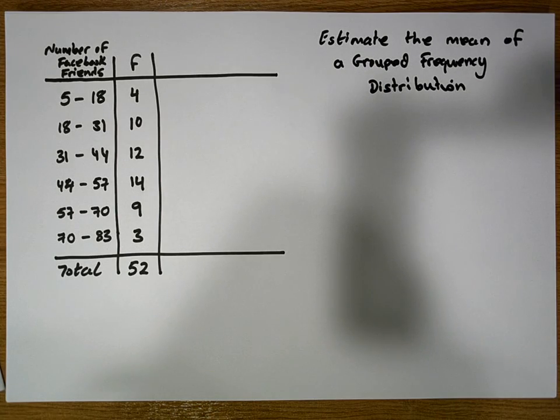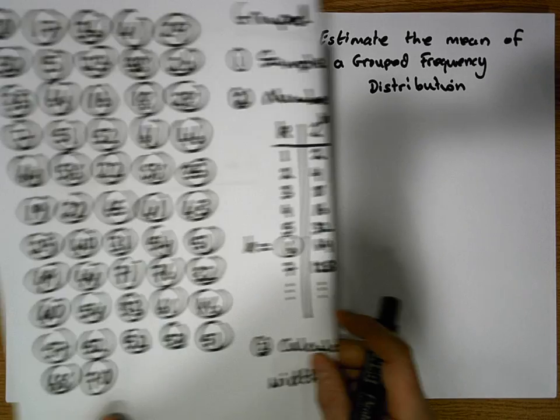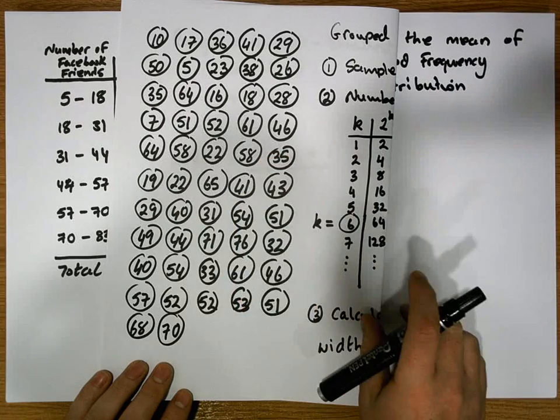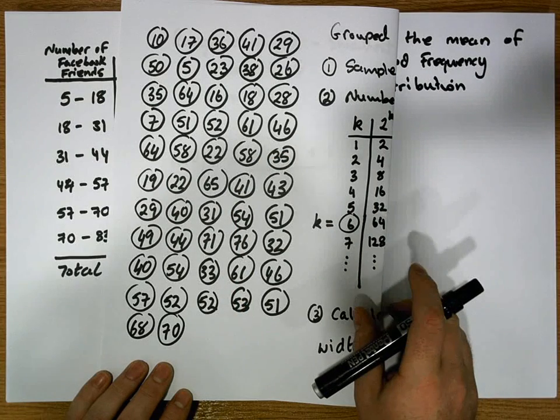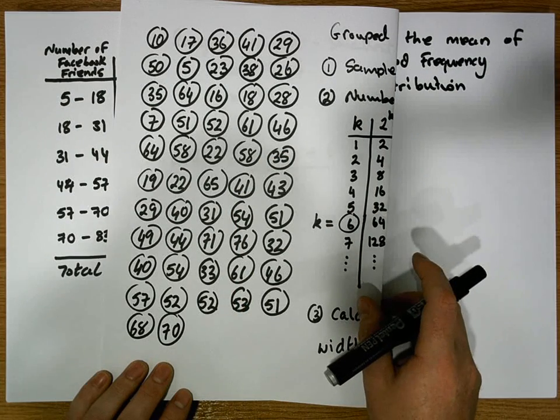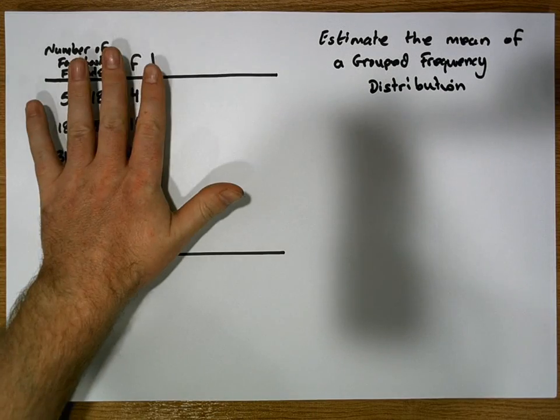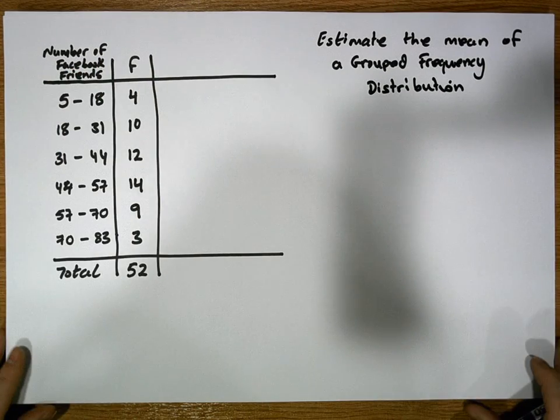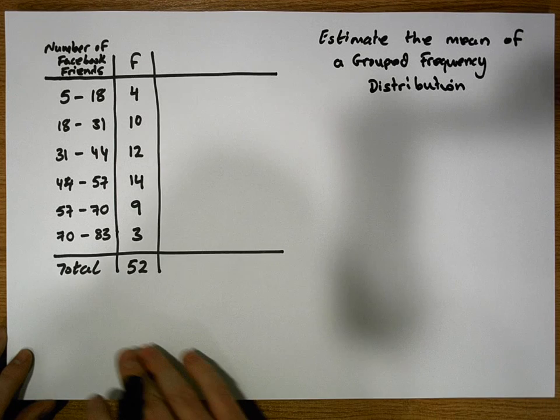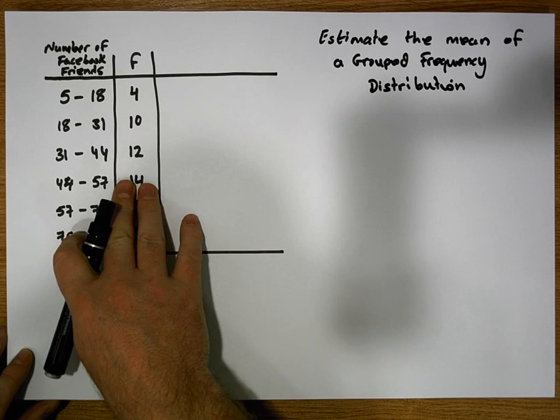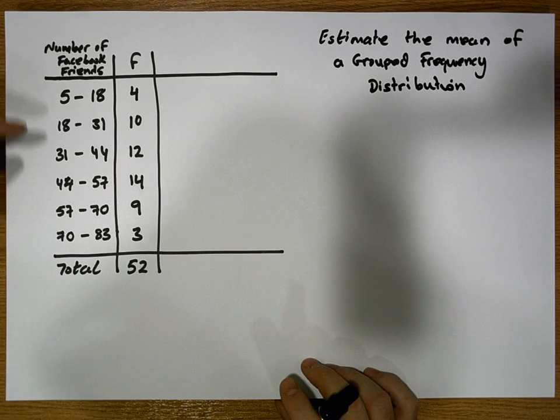This video is a follow-on from a previous video where we looked at a raw data set and went through the steps required to construct what's known as a grouped frequency distribution.